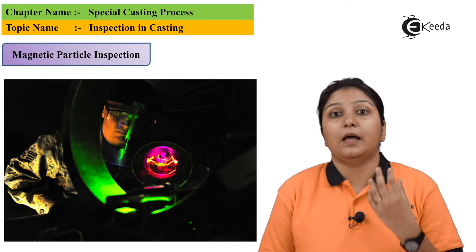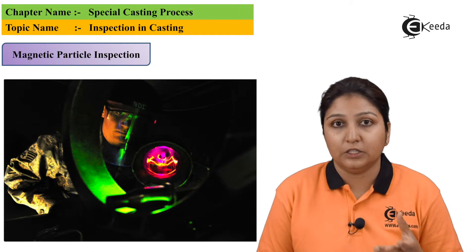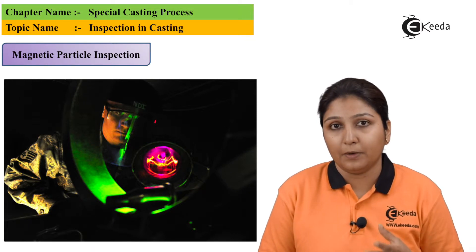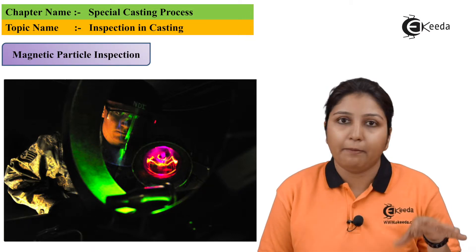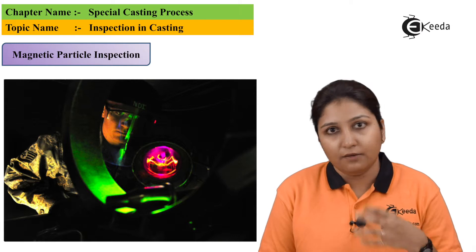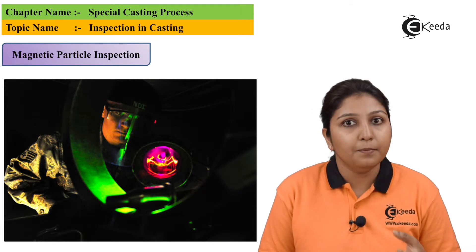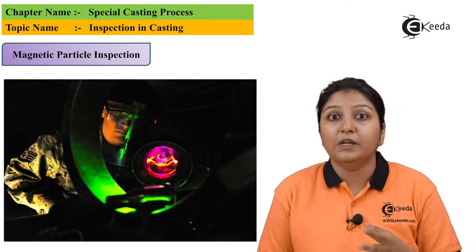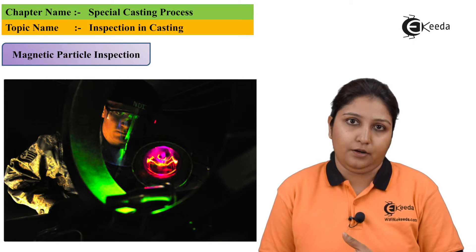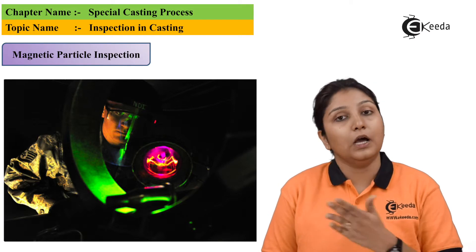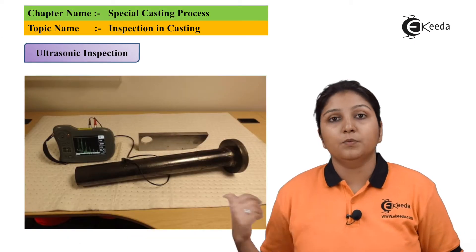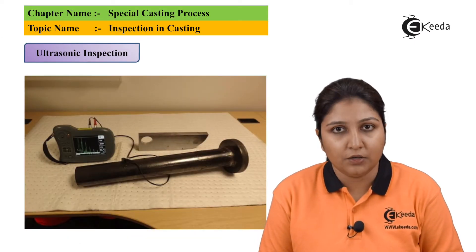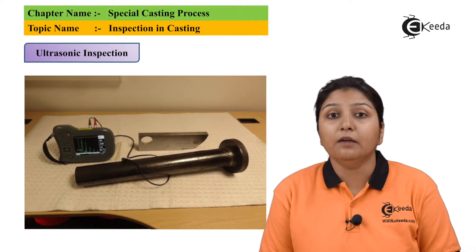Magnetic particle inspection is used when there are certain iron particles that need to be detected and removed from your casting. You move a magnet over the casting, and any iron particles will stick to it and be easily detected. The next method is ultrasonic inspection, where high-frequency ultrasonic rays are passed through the casting to carry out the inspection.